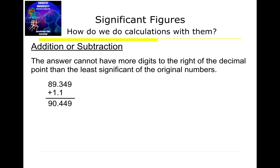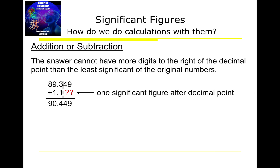Now let's look at example problems for addition and subtraction, and multiplication and division. In this first addition example, we're adding 89.349 and 1.1. You ask yourself how many digits each number has after the decimal point: 89.349 has 3, and 1.1 has only 1. Your final answer takes whichever has the smallest count — so one digit after the decimal point. Punching it into the calculator gives 90.449, but we round to 90.4.